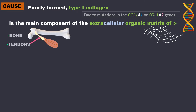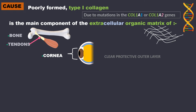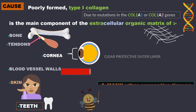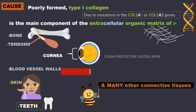Type 1 collagen is the main component of the extracellular organic matrix of bone, tendons, cornea, blood vessel walls, skin, teeth, and many other connective tissues. So in OI, all of these may be affected, giving rise to certain clinical characteristic features.